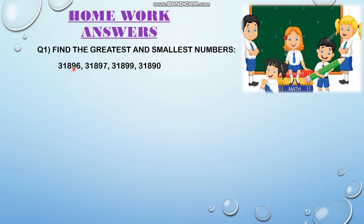Here all the numbers have the same number of digits — 1, 2, 3, 4, 5. All these are 5-digit numbers. So look at the leftmost digit: here it is 3 for all. Look at the second leftmost digit: it is 1 for all. Move to the next digit: it is 8 for all. Move to the next: it is 9 for all.